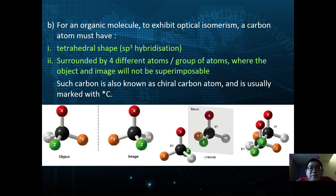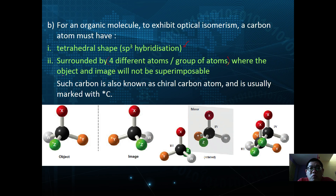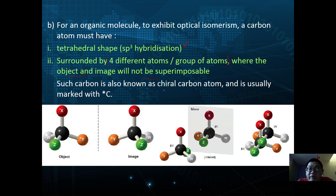For an organic molecule to exhibit optical isomerism, a carbon inside the molecule must be tetrahedrally bonded with sp3 hybridization, and most importantly surrounded by four different atoms or groups of atoms, making the object and image non-superimposable. That particular carbon is identified as a chiral carbon atom, marked with a star or asterisk.